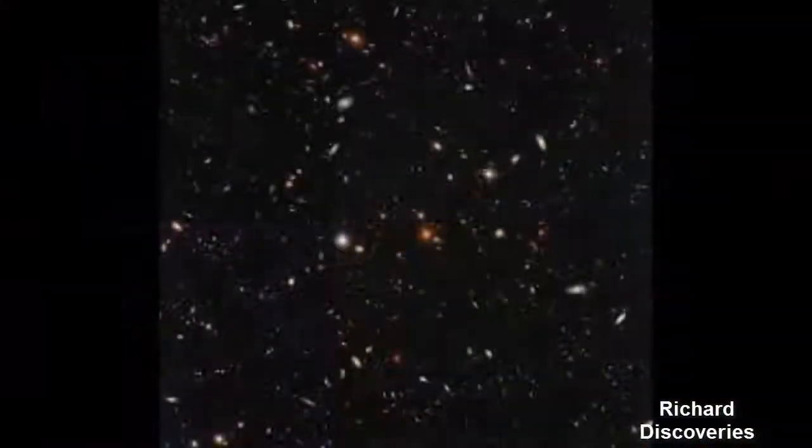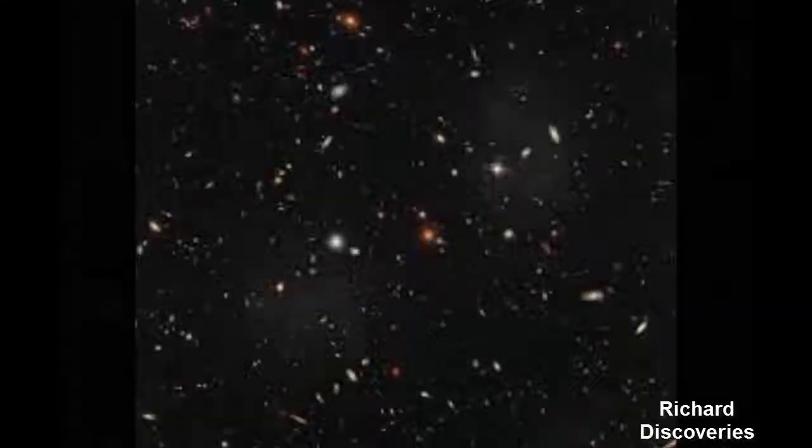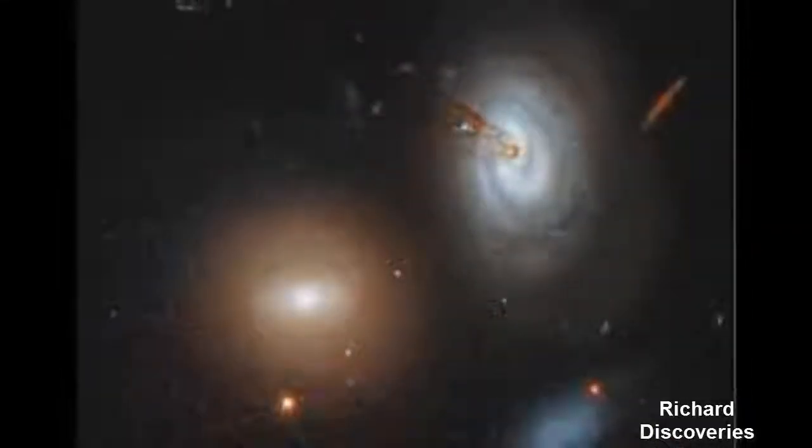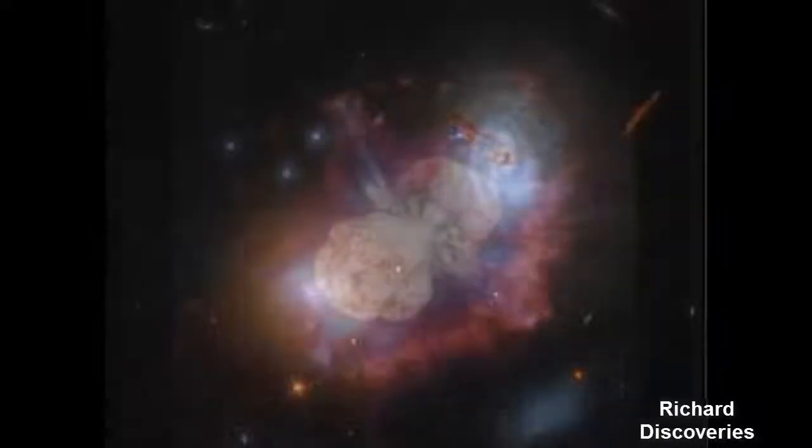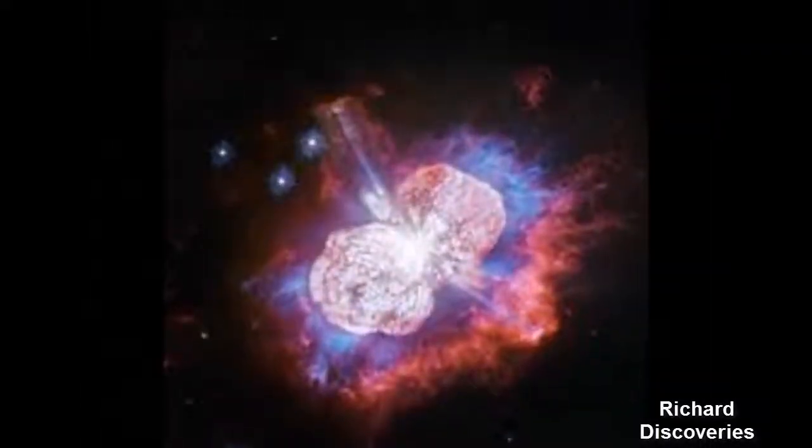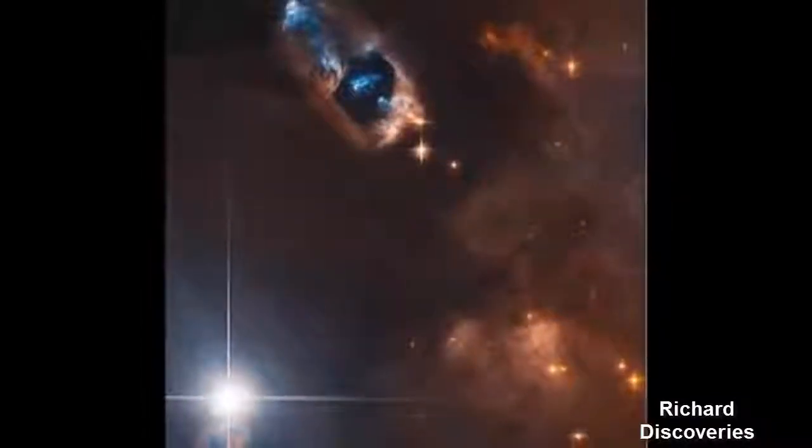A sub-Neptune exoplanet called Gliese 3470b is unlike anything found in the Solar System. Gliese 3470b is approximately 96 light-years away and circles a red dwarf star in the general direction of the constellation Cancer.